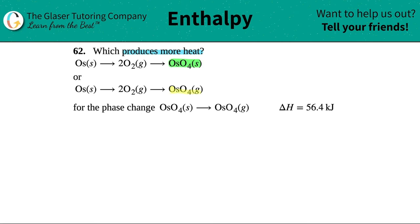The only difference here is that the top one I'm producing a solid and the bottom one I'm producing a gas. They do tell us that for the phase change from a solid to a gas, I need, or this system will need, 56.4 kilojoules. Now the question here is, will this conversion absorb 56.4 kilojoules or will it release 56.4 kilojoules?